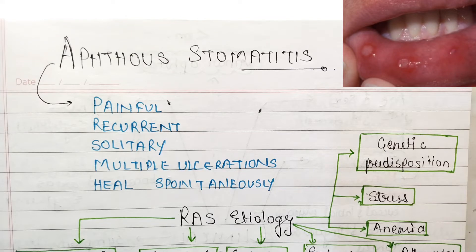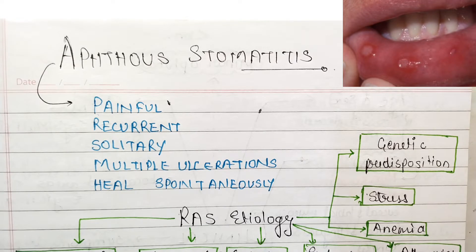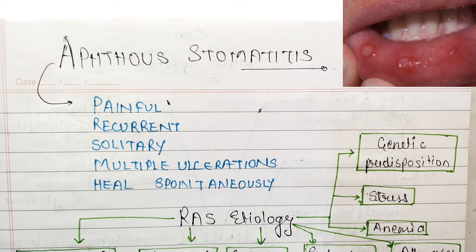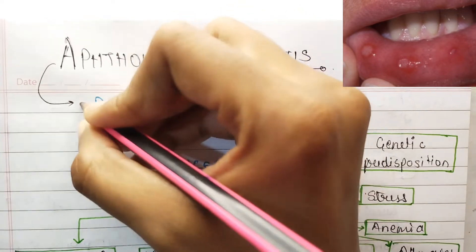Hello everyone, welcome to SAM — the Study Yard Motivation and Education. In this video we are going to discuss aphthous ulcer, or recurrent aphthous stomatitis. It is a very important disease in the field of dentistry. We are going to discuss its introduction, etiology, and classification. This is going to be part one of aphthous stomatitis.